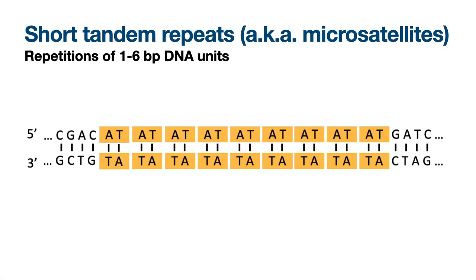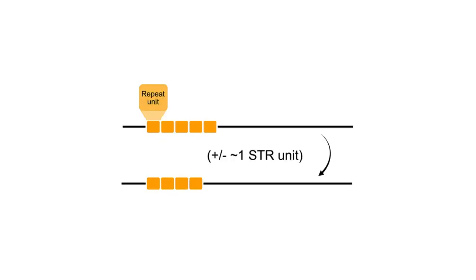Short tandem repeats, also known as microsatellites, are repetitive regions made up of one to six base pair repeat units. They are prevalent in the human genome and occur both in coding and non-coding regions. STRs are highly mutable — insertion and deletion mutations are very common in STRs and typically result in one or more repeat units being inserted or deleted, leading to copy number variation at STRs.